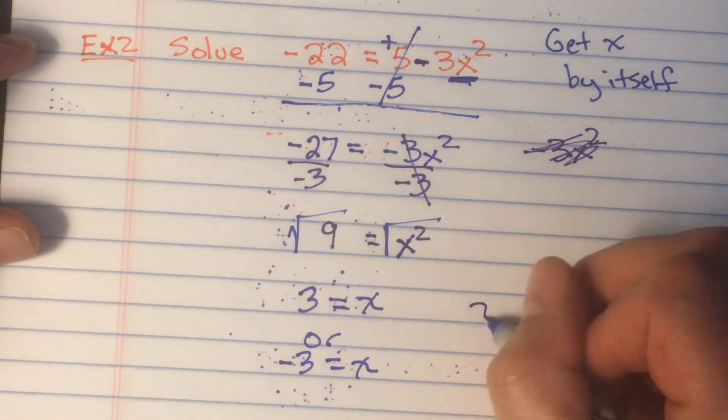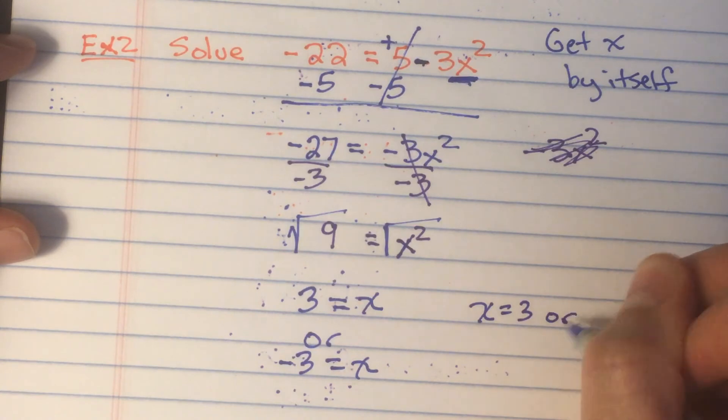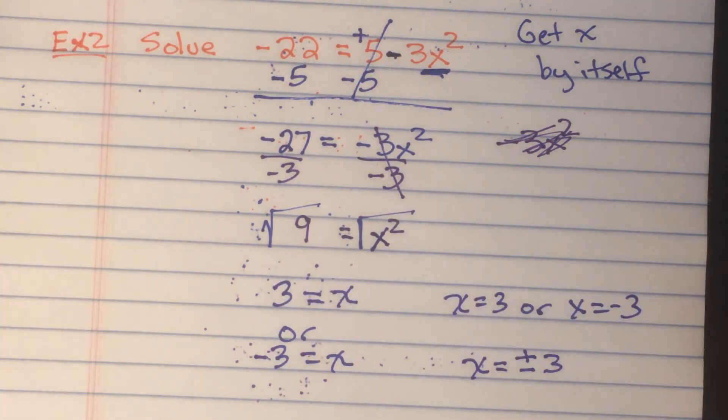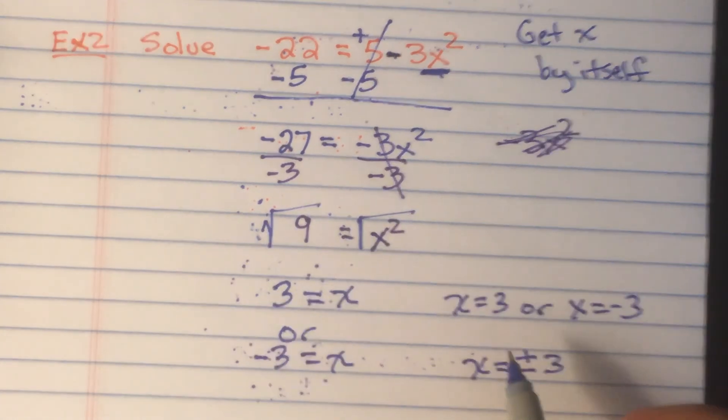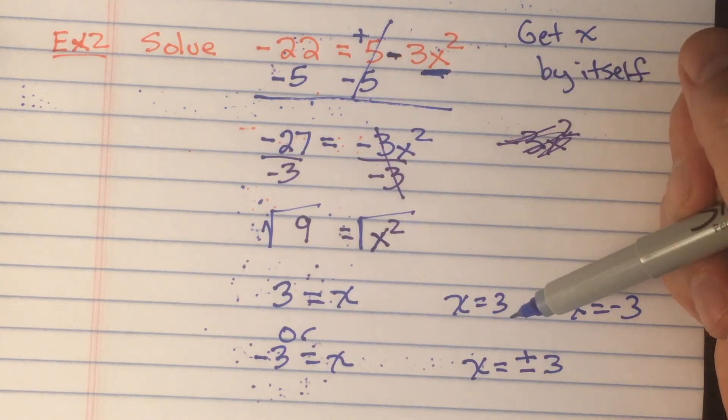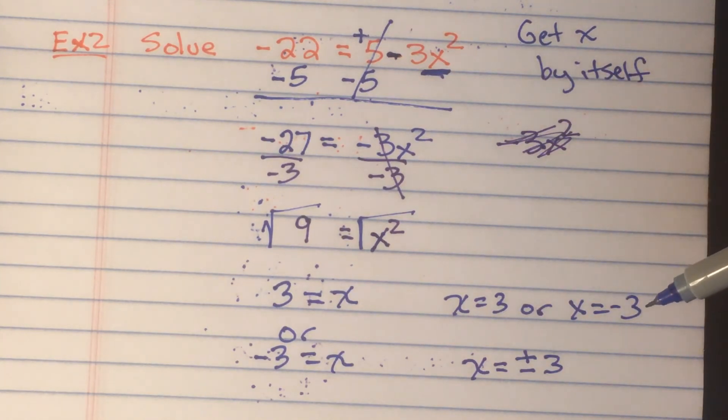Now, you might want to rewrite it as x equals 3 or x equals negative 3. You could even rewrite it as x could equal plus or minus 3. Any of these answers work. They're all the same. They're just different ways of representing that right answer. But in the end, what we found is the x value that would go in here to make this true could either be a positive 3 or a negative 3.